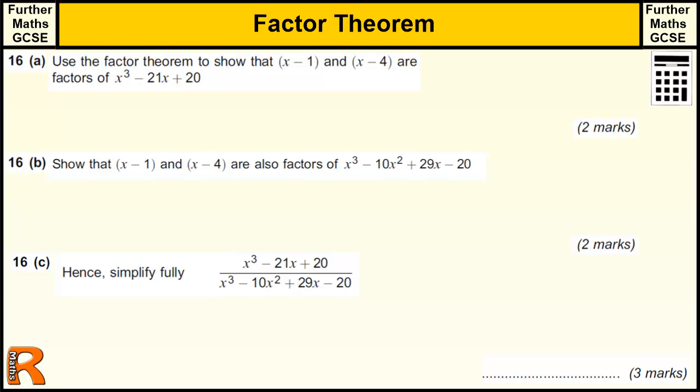Factor theorem, further maths GCSE, which is a level 2 qualification. Okay, the first question, part of this question, we've got to use the factor theorem to show that these are factors of this. Now the factor theorem says that if something is a factor, then if we substitute that number into the equation, we get 0.